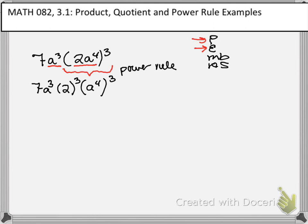So let's continue our problem. So we have 7a to the third. You can use a calculator to evaluate 2 cubed. That gives you 8. And then a to the fourth quantity cubed is an example of our power rule.